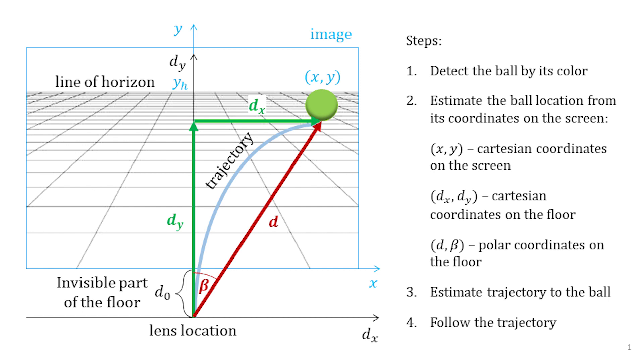I need the polar coordinates of the ball on the floor to estimate the trajectory to the ball. There is a part of the floor close to the car that is invisible to the camera. There is also the line of horizon which limits the ball possible location in the image. I need to take all that into account.